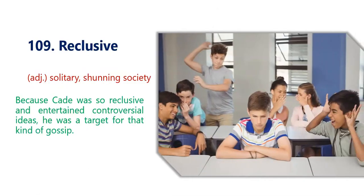The ninth word is reclusive, meaning solitary, shunning society — a person who hates people. Because Keir was so reclusive and entertained controversial ideas, he was a target for that kind of gossip. In this picture we can see a boy who is a victim of bullying because of his antisocial personality.